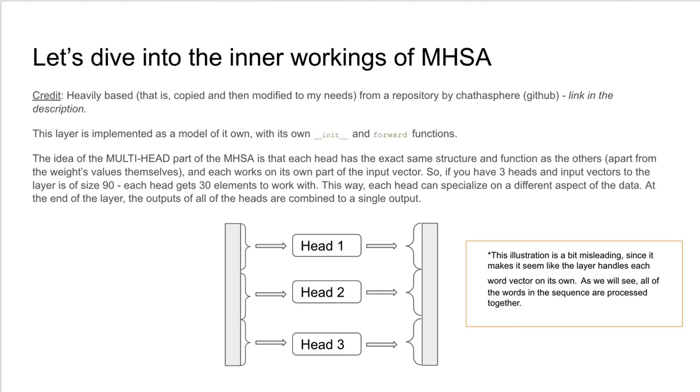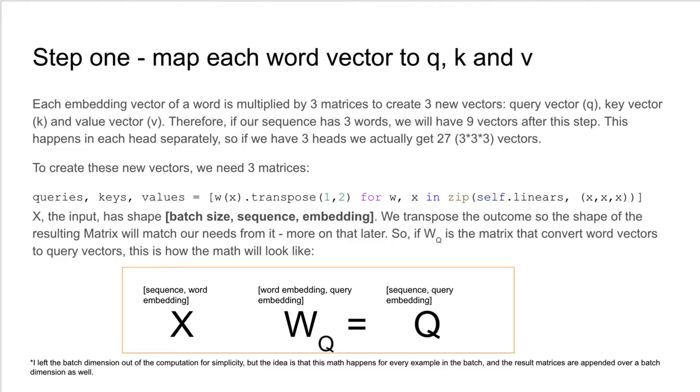Now let's dive deeper into the inner workings of multi-head self-attention. This layer is implemented as a model of its own, with its own init and forward functions. The idea of the multi-head part of the multi-head self-attention is that each head has the exact same structure and function as the others, apart from the weights values themselves, and each value on its own part of the input vector. So if you have three heads and input vectors for the layer of size 90, each head gets 30 elements to work with. This way, each head can specialize on a different aspect of the data. At the end of the layer, the output of all of the heads are combined into a single output that goes on to the next layer.